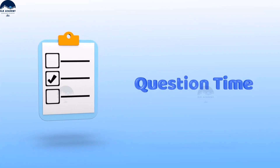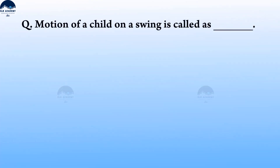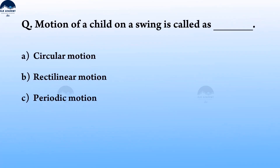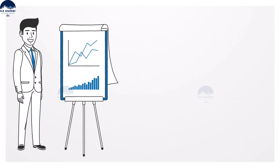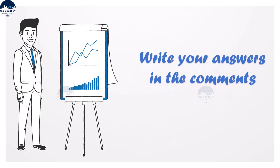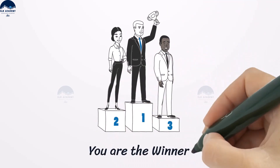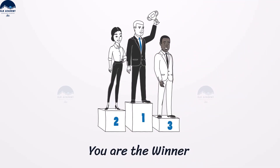Here is a question for you: the motion of a child on a swing is called — Option A: Circular motion, Option B: Rectilinear motion, Option C: Periodic motion. Write down your answers in the comment section below.